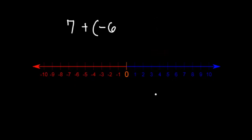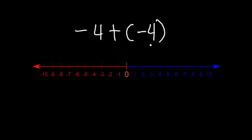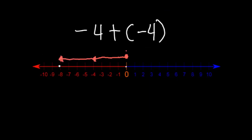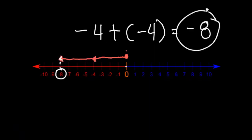For the third example, we have negative 4 plus negative 4. Dalawa na po yung negative natin. Start tayo from 0. Mag-move tayo ng apat na beses to the left: 1, 2, 3, 4 — natapos tayo sa negative 4. May isa pang negative 4, so mag-move ulit tayo ng apat na beses to the left: 1, 2, 3, 4. Natapos tayo sa negative 8. Ang sagot sa negative 4 plus negative 4 is negative 8.